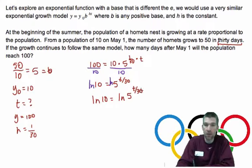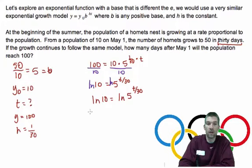Well, any exponent inside a logarithm can be written outside the logarithm using multiplication. So, natural log of 10 equals T over 30 times the natural log of 5.